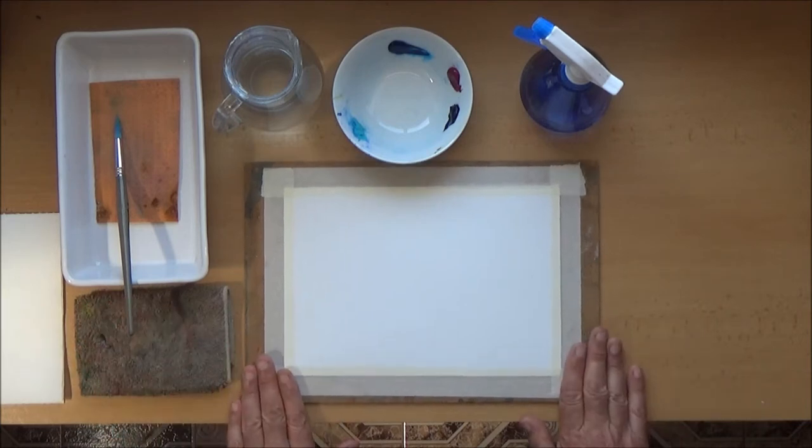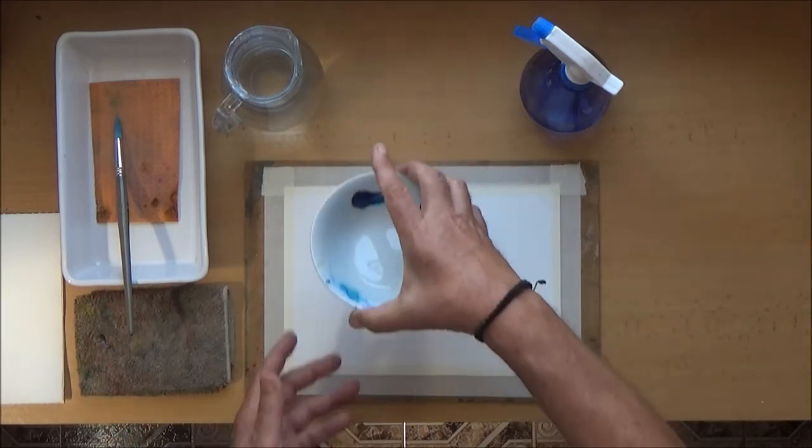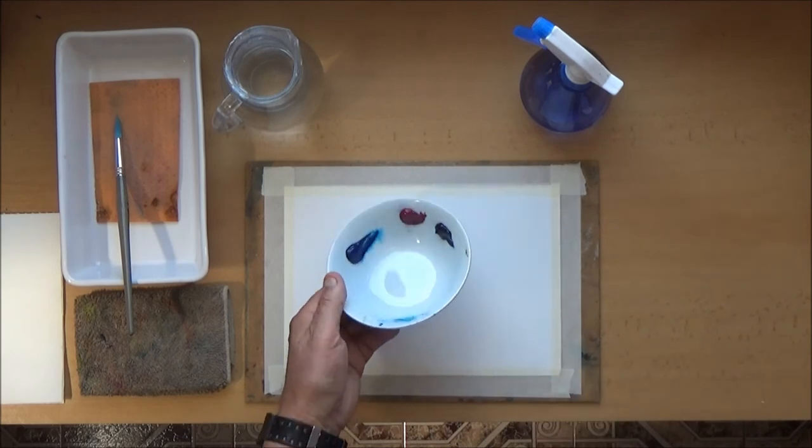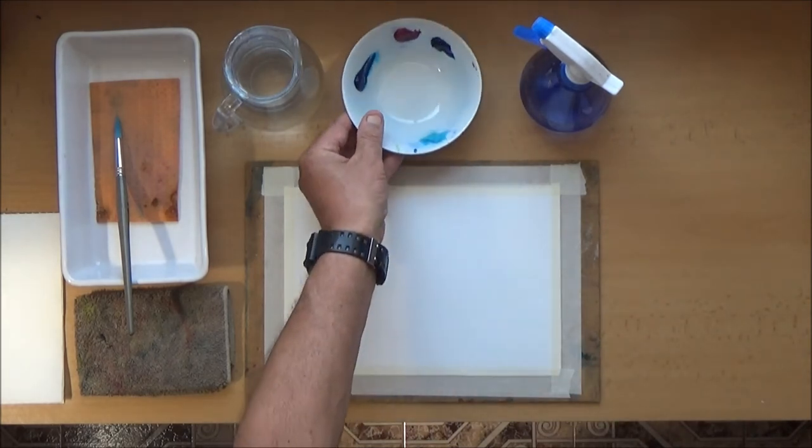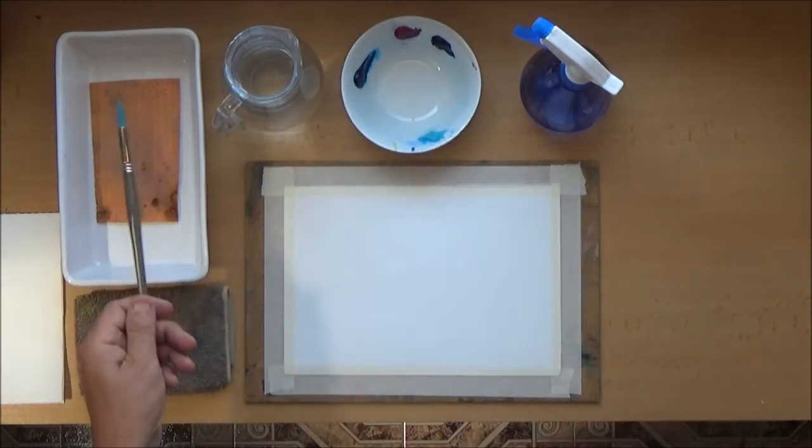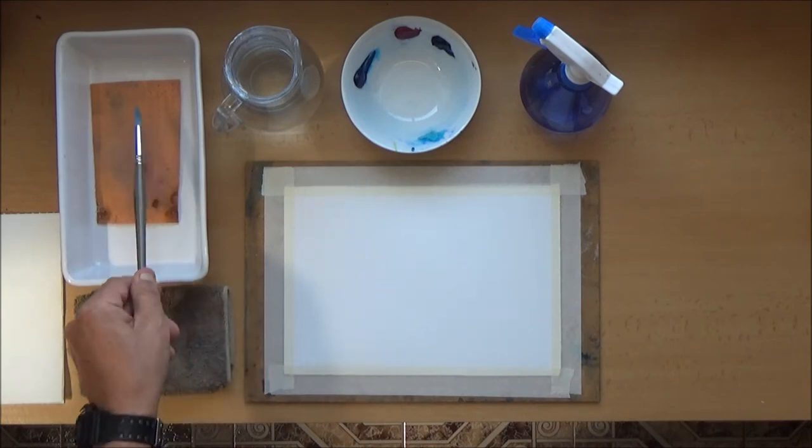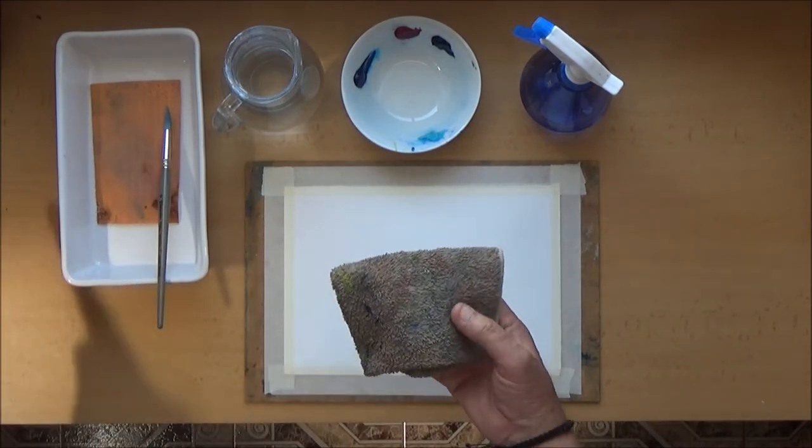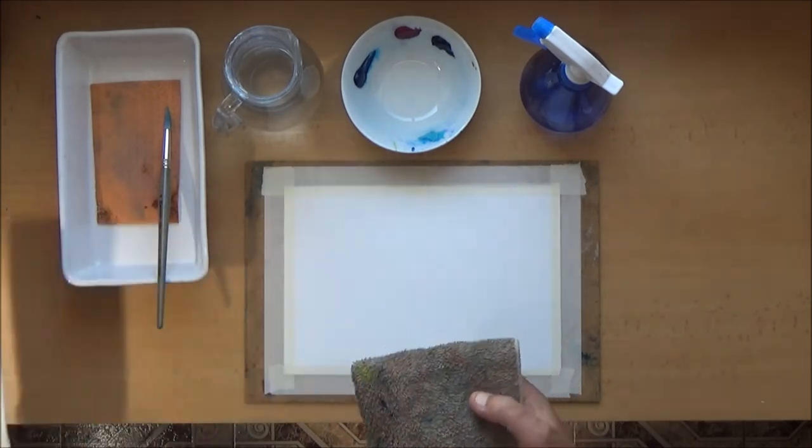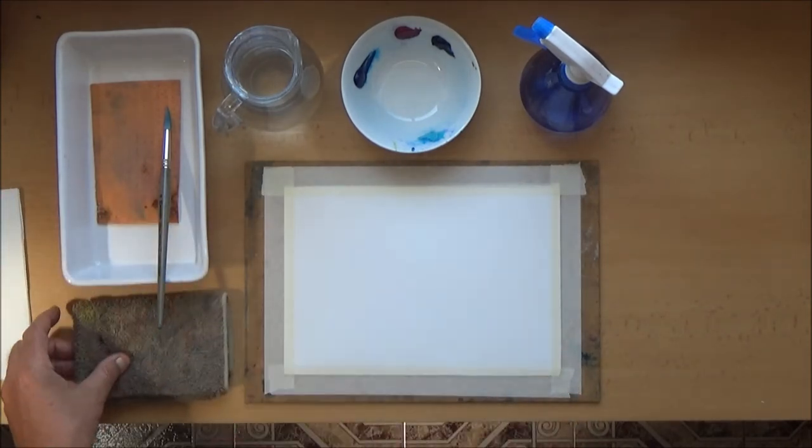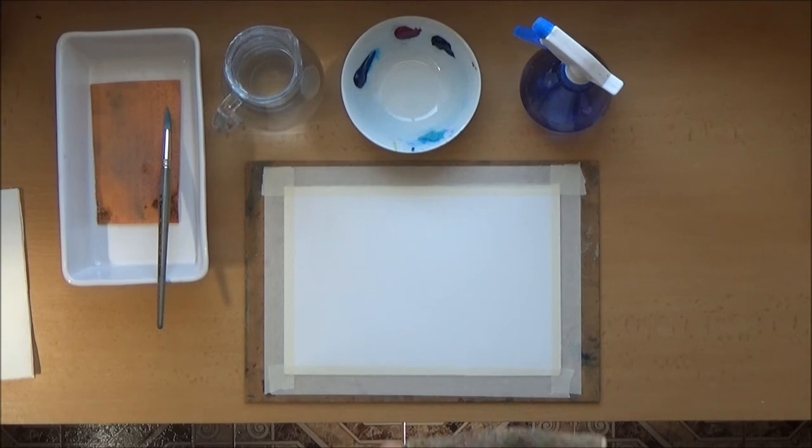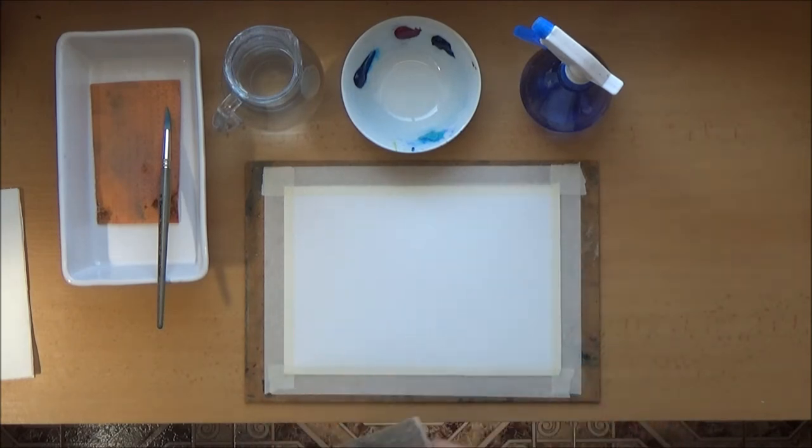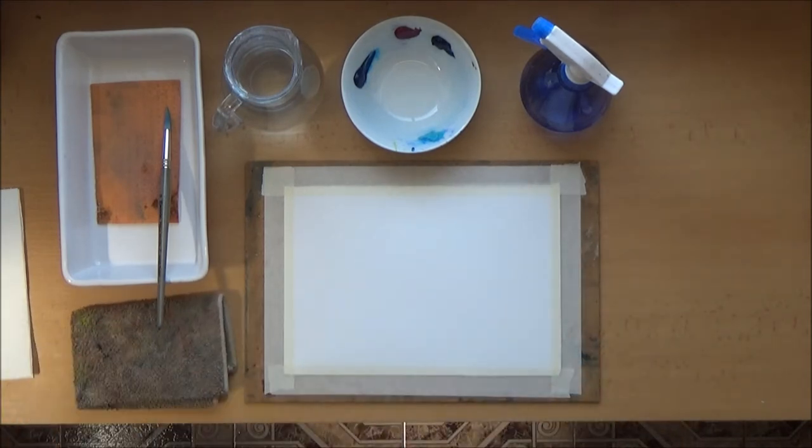I've got here some Bockingford paper just taped down, some colours, they're just pinks and purples and blues, and some water, clean water, and a brush, and a pot to put this in, and a cloth, which is minging, or a piece of tissue, which is probably what you'd use. But I love this cloth, it gets a bit smelly from time to time, so I have to give it a good washout in detergent. So this is the theory.